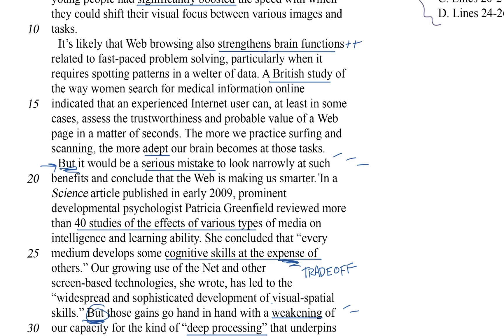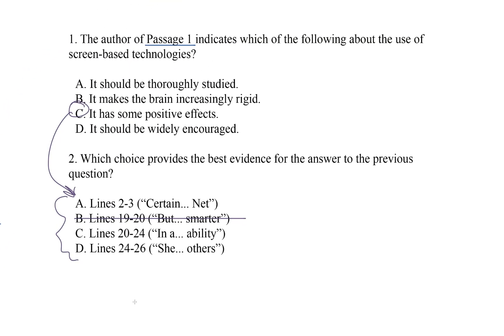It just tells us that Greenfield reviewed lots of studies. Does that have a match in the first question? Let's go back. Sort of. Choice A tells us that it should be studied, but that's not the same as a scientist reviewed lots of studies. So, we can cross it off.